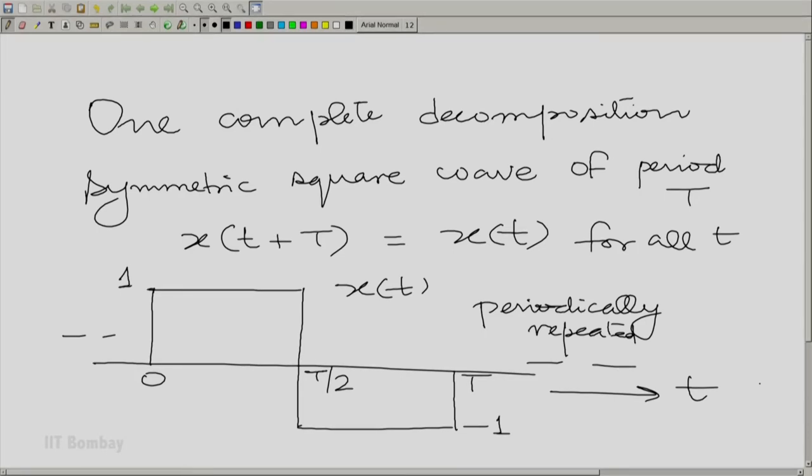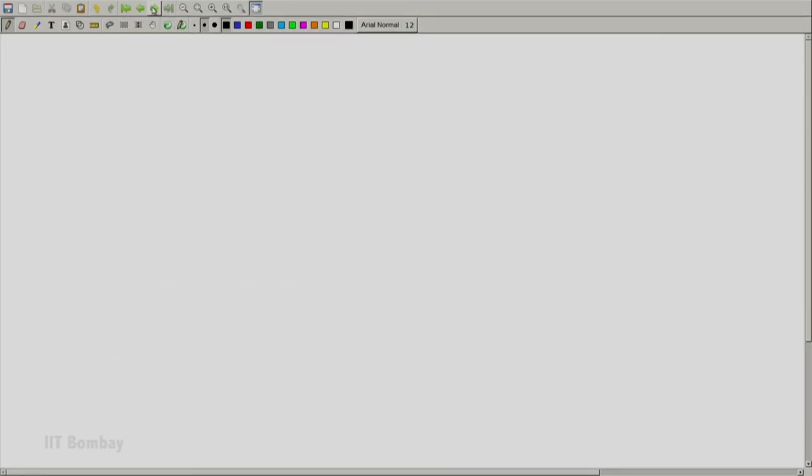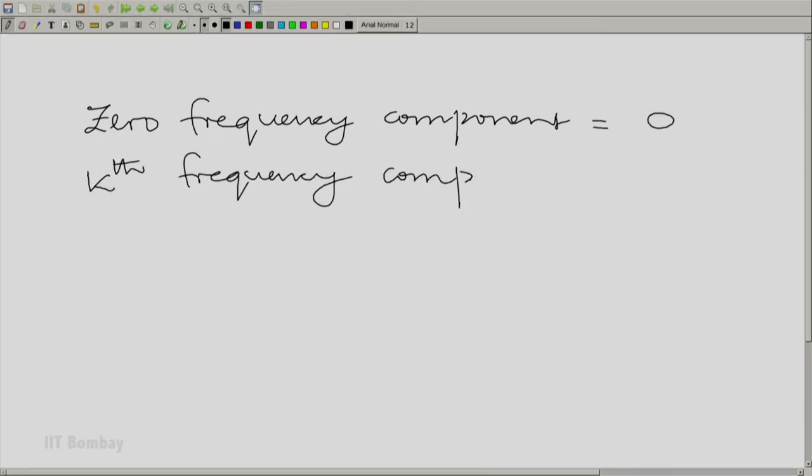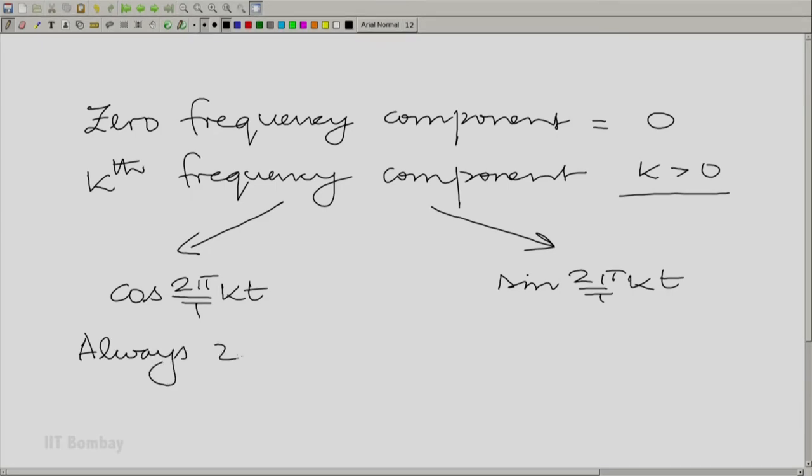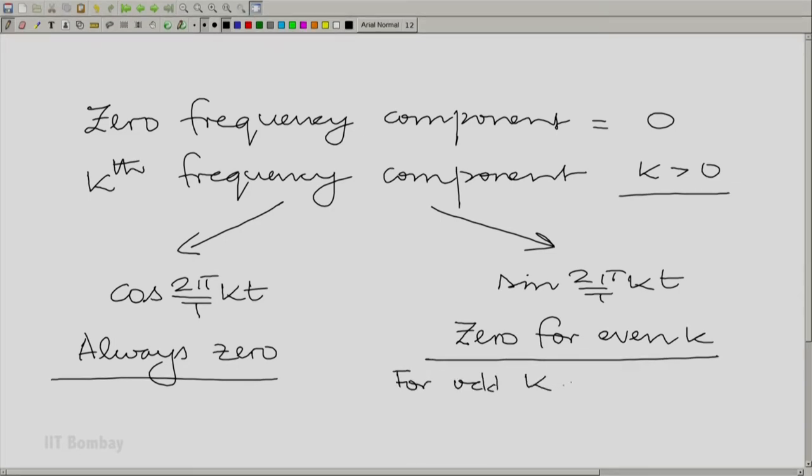Now we calculated the components. We said the 0 frequency component is equal to 0. The kth frequency component would have 2 orthogonal components again: a cosine component and a sine component, k greater than 0 of course. The cosine component is always 0. The sine component is 0 for even k. For odd k, it is non-zero.